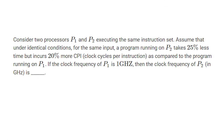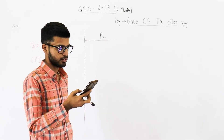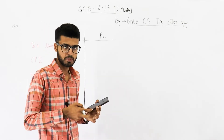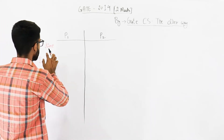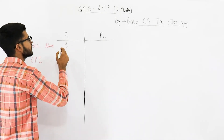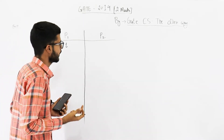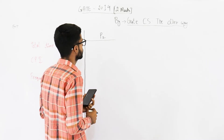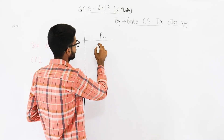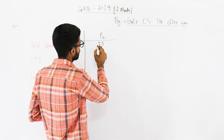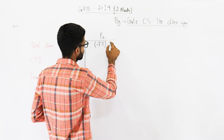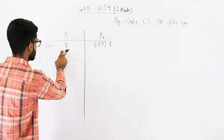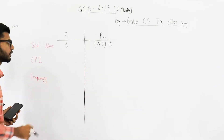Consider two processors P1 and P2 executing the same instruction set. Assume that under identical conditions, for the same input, a program running on P2 takes 25% less time. If that program takes time T on processor P1, then it is going to take 25% less time on P2, which means 0.75 times T, because reducing 25% from T leaves you with 0.75T.